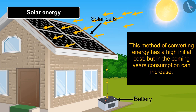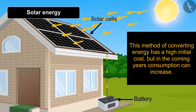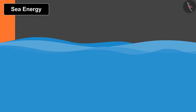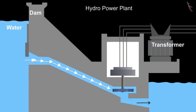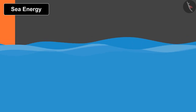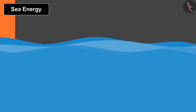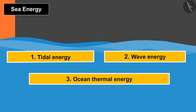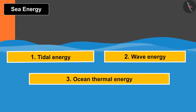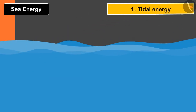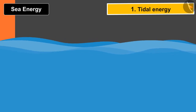This method of converting energy has a high initial cost, but in the coming years consumption can increase. The second form of energy is obtained from the sea. Similar to the hydropower plant we learned about previously, here too there are three kinds of sources: tidal energy, wave energy, and ocean thermal energy.